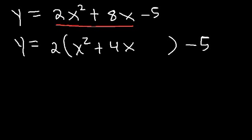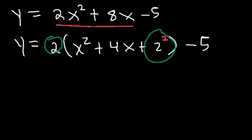Now let's complete the square. Look at the middle term — the number in front of x. We need to take half of that value and square it. Half of 4 is 2, so it's going to be 2 squared. Now notice that we added 2 squared times 2 to the right side of the equation. 2 squared is 4, and 4 times 2 is 8.